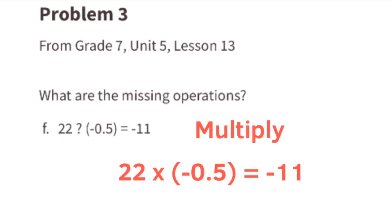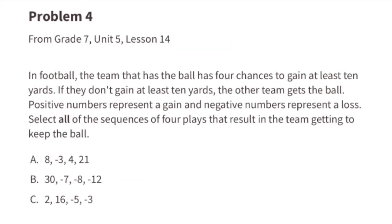Part f: what operation sign can we substitute to make this equation true? A multiplication sign, because 22 times negative 0.5 equals negative 11. Another way to think of this: a positive times a negative equals a negative, and 0.5 is equal to half. Half of 22 is 11, and remember the answer is negative 11.